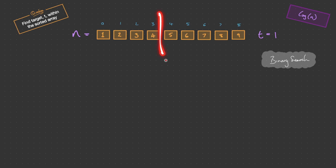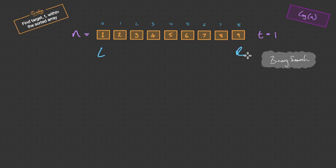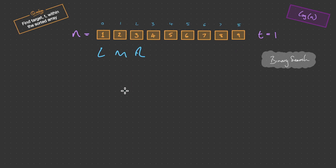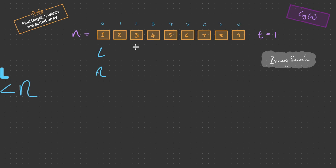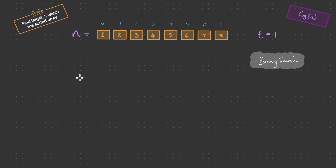Binary search splits the array in half. We take a left pointer, a right pointer, and a mid. We check if the value at mid is greater than the target — it's 4, which is greater than our target — so we move right to mid minus 1. Mid is updated, and we repeat the process. Mid is still greater than the target, so right becomes mid minus 1 again. As long as left is less than or equal to right, we carry out this process. Now left and right are at the same point, so we can just return the index.